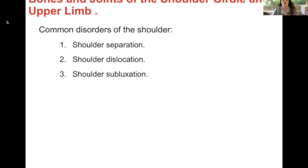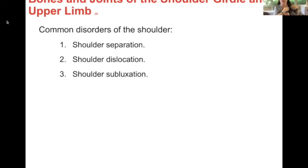Common disorders of the shoulder: shoulder separations, shoulder dislocation, and shoulder subluxation. Subluxation is where the ball of the humerus slips partially out of the socket, then moves back in. I've been documented with this kind of thing — I hold stress in my shoulders, the muscles tighten enough to pull my shoulder out, and when I do this I'm constantly hearing them pop back in. It's kind of creepy.